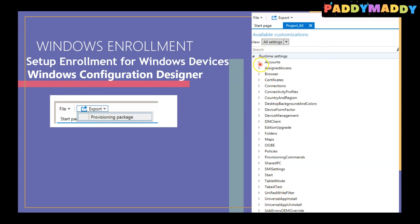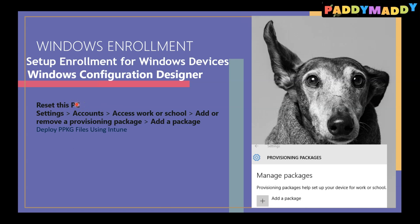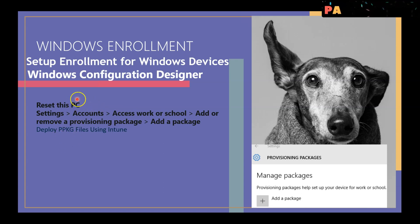Once you've configured everything, you can export and save the PPKG file. How do you use that package? Option one: if you have an existing device and want to do a reset, during the reset process it asks whether you want to recover from media. Inside that media you can put this PPKG file, and automatically during the OOBE experience - keyboard selection and all that - it performs the automation and configures the settings for provisioning that device.